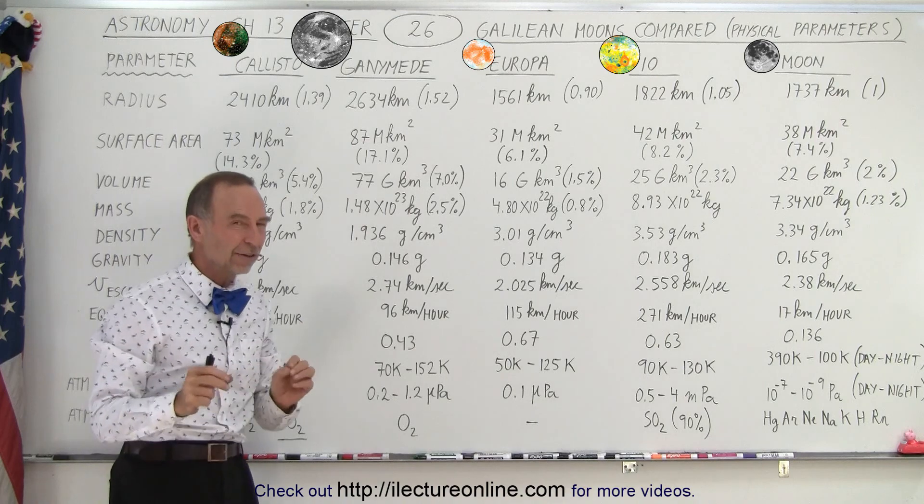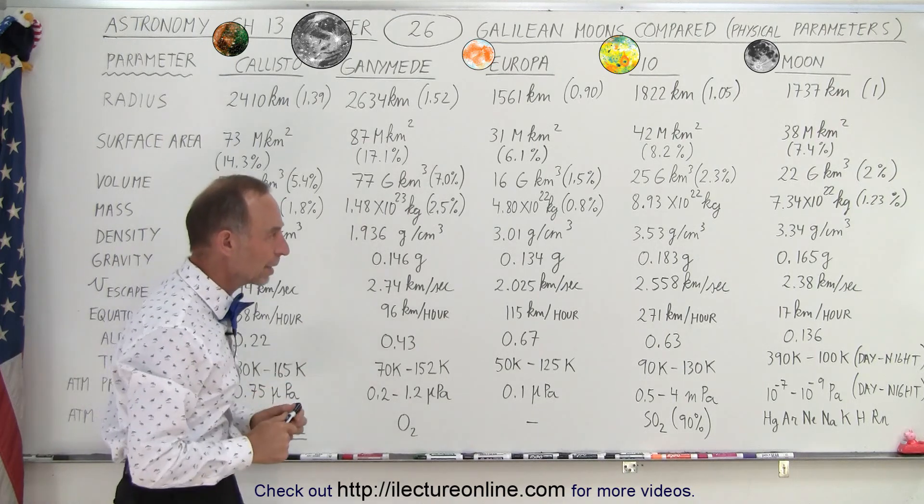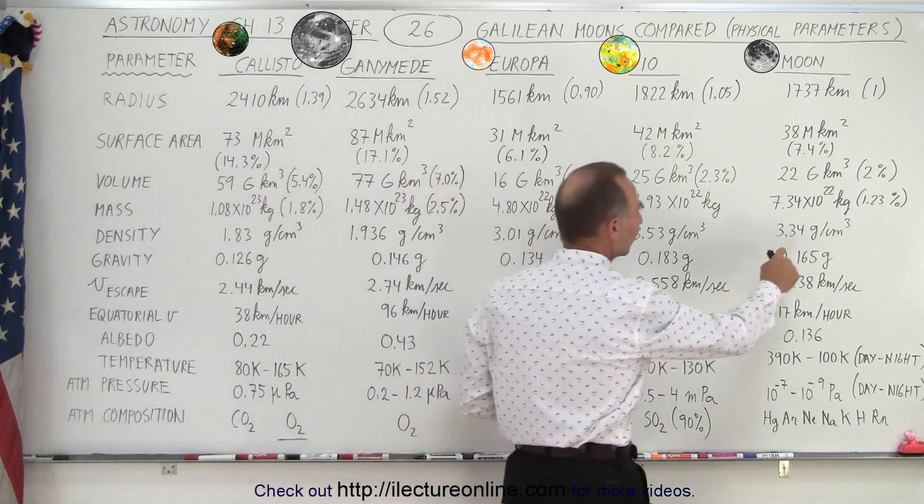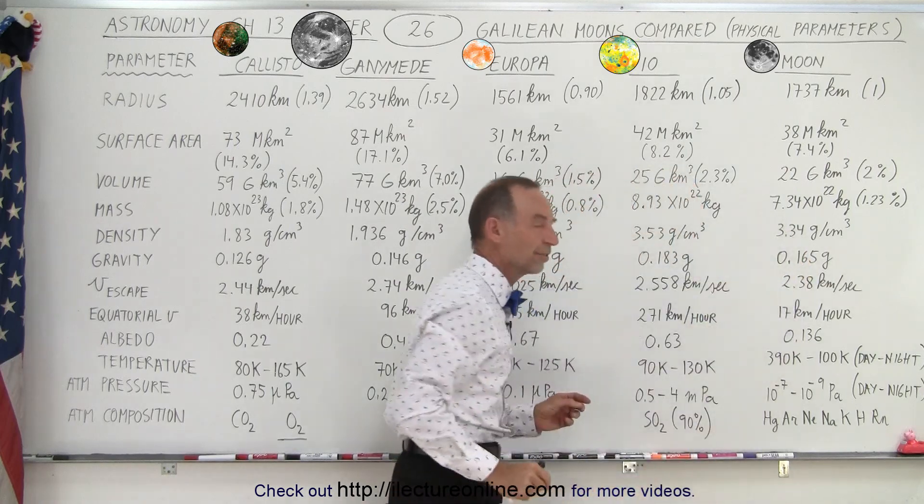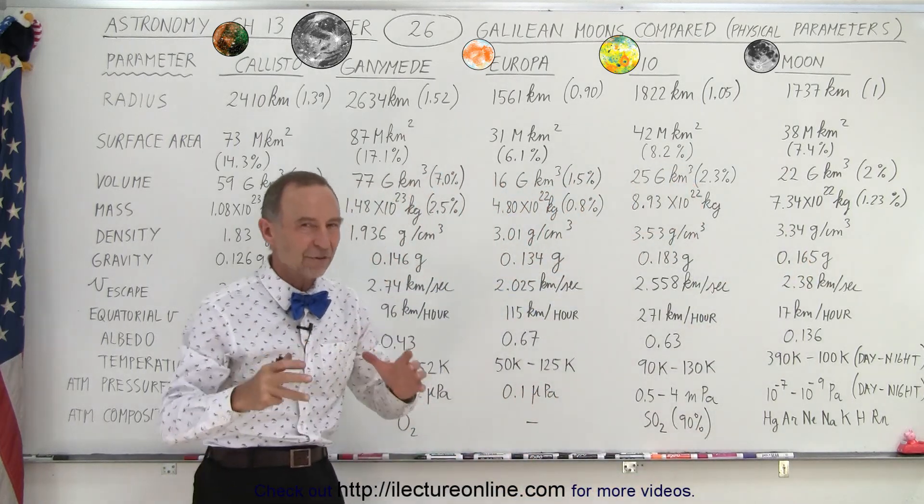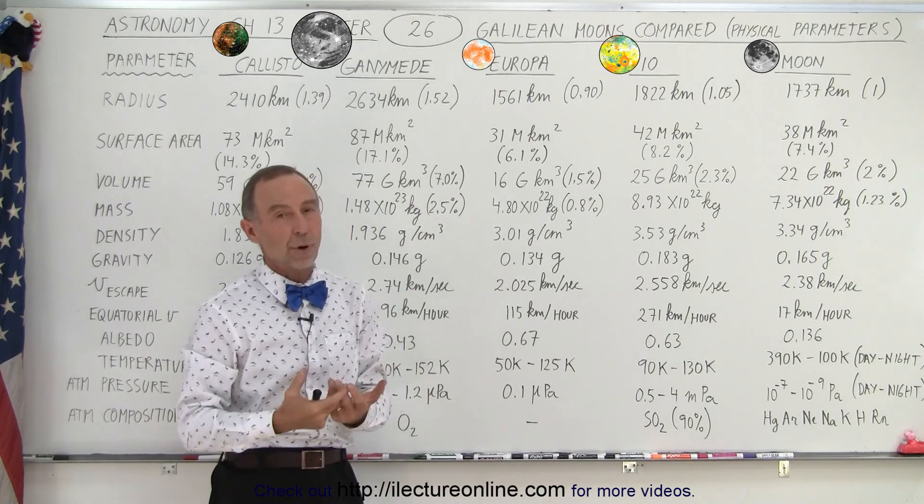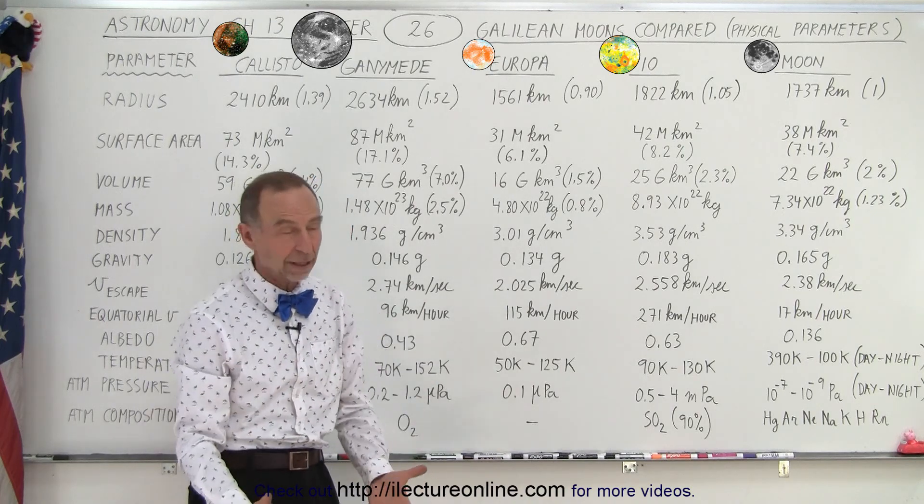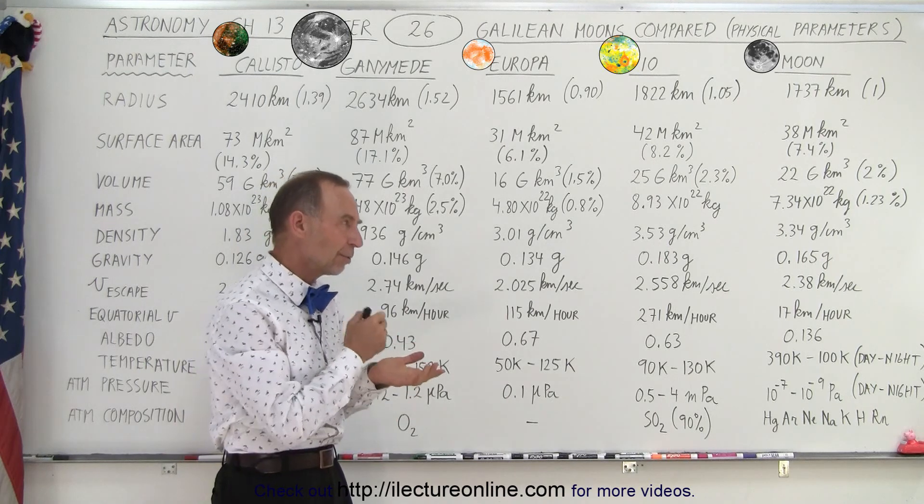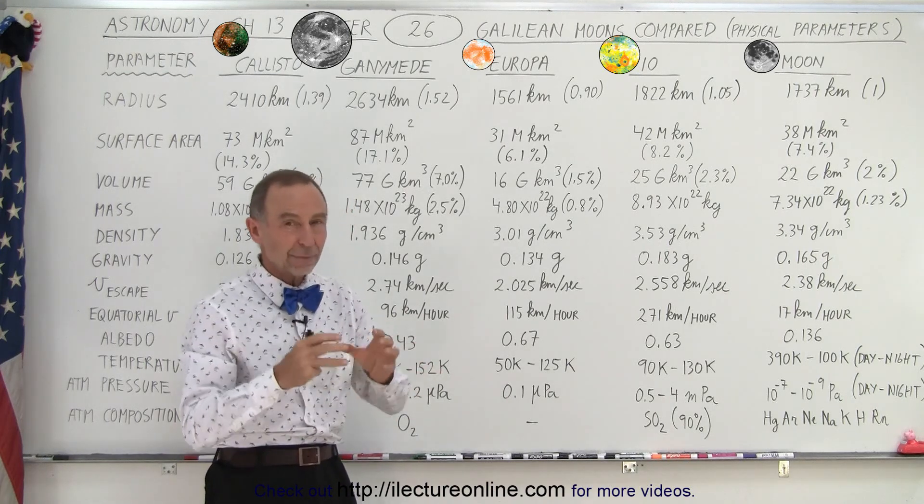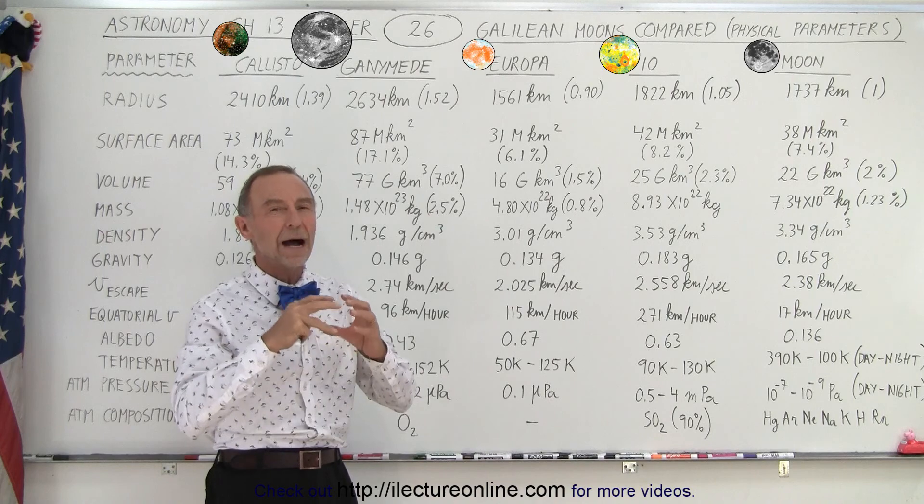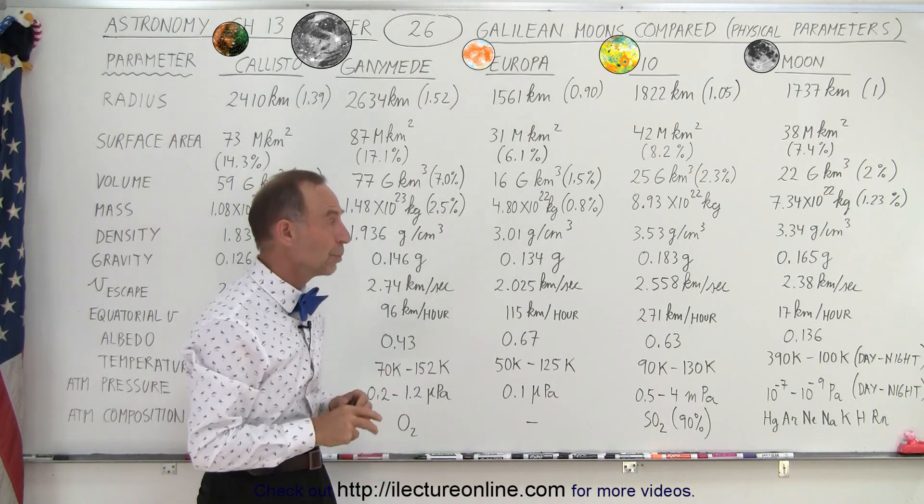Density wise, notice that is a very important quantity here. The moon has a density of 3.34 grams per cubic centimeter, which means that the average density of the moon is greater than the average density of rock. Now we think the moon is primarily made out of rock, that is correct. But because it's 3.34 grams per cubic centimeter, we expect that there's a small iron core at the center of the moon.